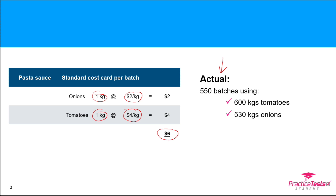What actually happened in the period: we made 550 batches using 600 kilos of tomatoes and 530 kilos of onions. In terms of mix, we've used more onions than tomatoes, whereas the standard mix was equal amounts of each. That means it's a more expensive mix, so I'm expecting bad news when it comes to the mix variance.